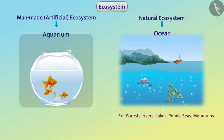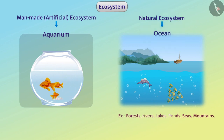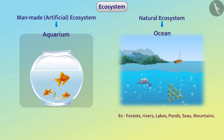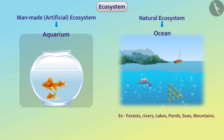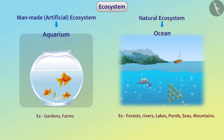Ecosystems created by nature like ocean, forest, rivers, lakes, ponds, seas, mountains etc. are all natural ecosystems. While ecosystems created by humans such as aquarium, gardens, and farms are all man-made ecosystems.